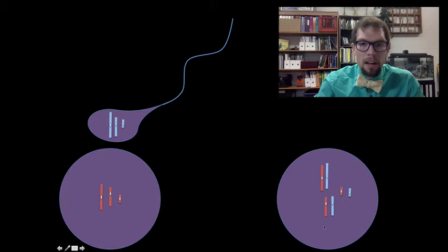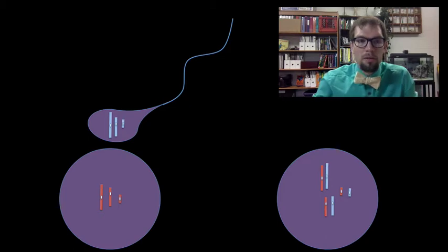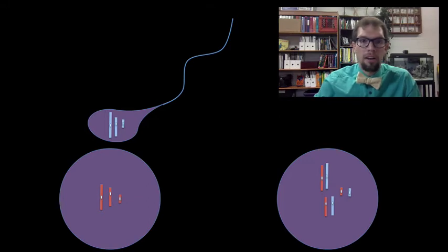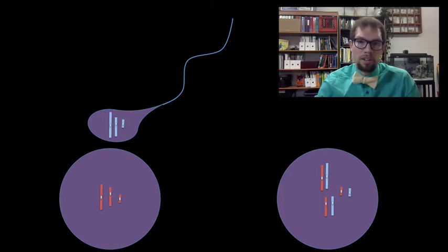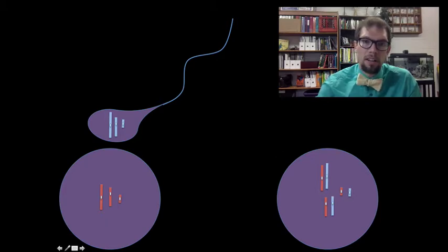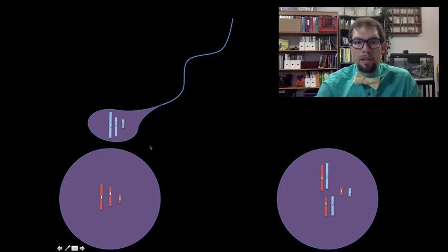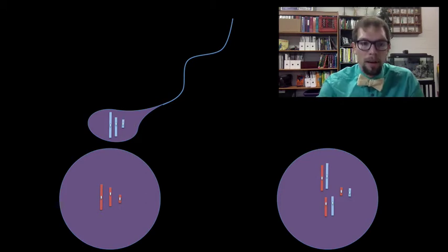The zygote will give rise to many different types of cells. Some of the cells it gives rise to are the somatic cells — soma means body, so these are the cells of your body that aren't involved in reproduction. The other cells it gives rise to are the germline cells, which will divide to eventually give you the gametes.